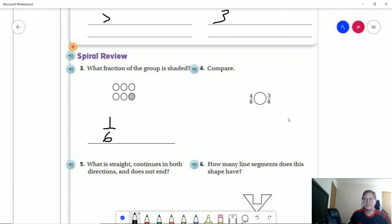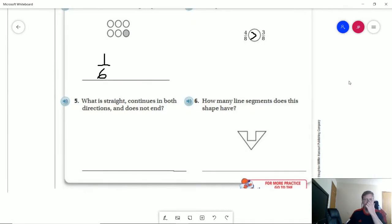That's going to give me one sixth. Comparing these, because the bottom numbers are the same, whichever one is the larger top number will be the greater side. And so that would be greater, four eighths is greater than three eighths.